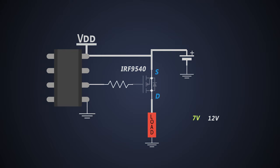Because the voltage at the source is 12 volts and 7 volts is at the gate. If we see the voltage difference between gate and source, it would be around minus 5 volts, which is more than the gate threshold voltage. Hence the MOSFET would turn on.